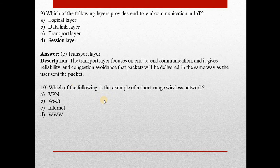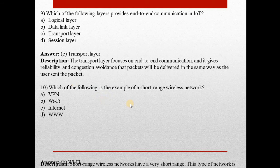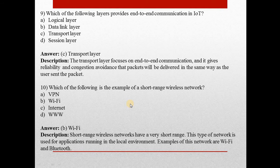Question ten: Which of the following is an example of a short range wireless network? Answer is Wi-Fi. Short range wireless networks have a very short range and are used for applications running in the local environment. Examples of short range wireless networks are Wi-Fi and Bluetooth.